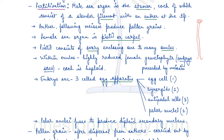The female sex organ is basically the pistil or carpel. The pistil consists of an ovary enclosing one to many ovules. Within these ovules we have the highly reduced female gametophyte, and the embryo sac formation is preceded by meiosis.